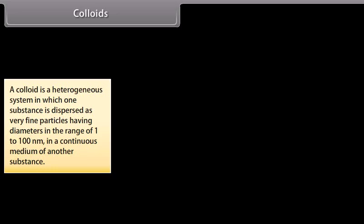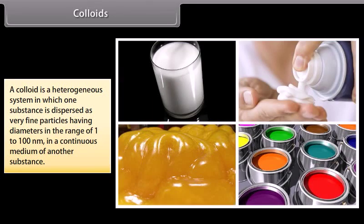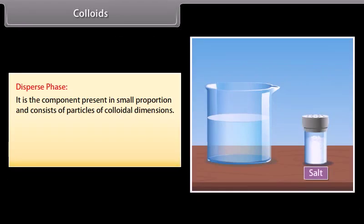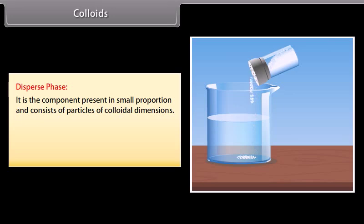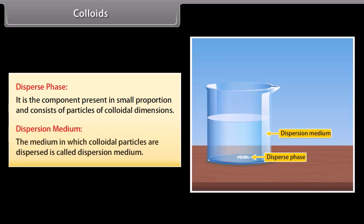A colloid is a heterogeneous system in which one substance is dispersed as very fine particles with diameters in the range of 1 to 100 nanometers in a continuous medium of another substance — for example, milk, shaving lather, jelly, and paint. A colloidal solution always consists of at least two phases: the disperse phase, which is the component present in small proportion with colloidal dimensions, and the dispersion medium, in which the colloidal particles are dispersed.